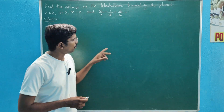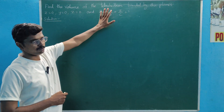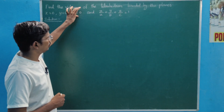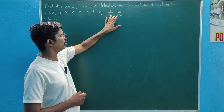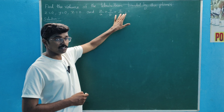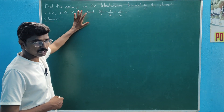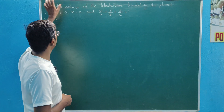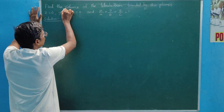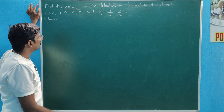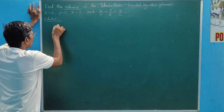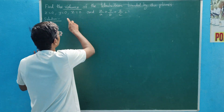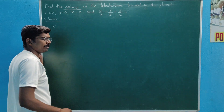We will find the volume of the shape bounded by the planes x equal to 0, y equal to 0, z equal to 0, and x divided by a plus y divided by b plus z divided by c equal to 1. We will find the volume of this shape.